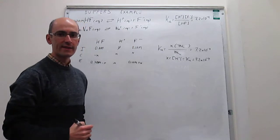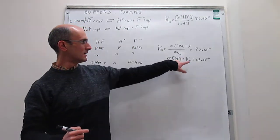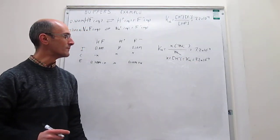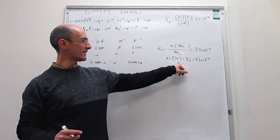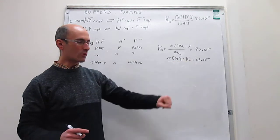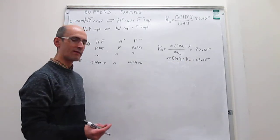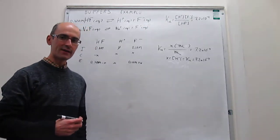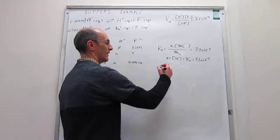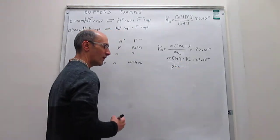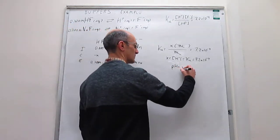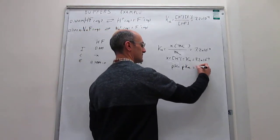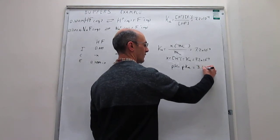The approximation is valid because the value of X is much less than 5% of the 0.1 we're neglecting it against. This is something important that happens in buffer solutions: at equilibrium, the concentration of protons equals the Ka of the acid. We have seen this with acetic acid and now with hydrofluoric acid, so it is general. For a buffer solution, the pH is going to be equal to the pKa, which for this example gives a pH of 3.14.